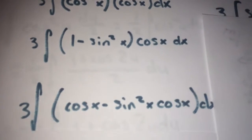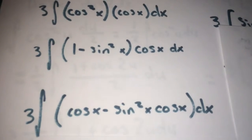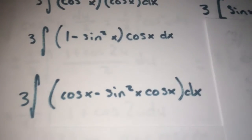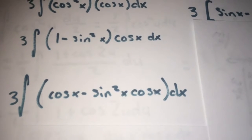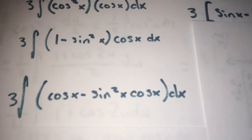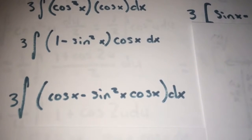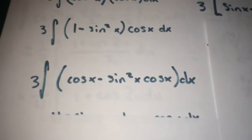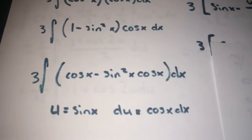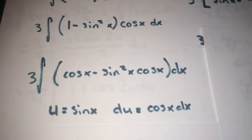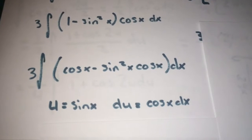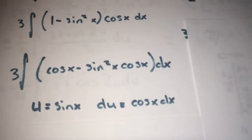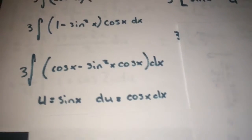From there you can simplify further. That becomes cosine x minus sine squared x times cosine x dx — just multiply it out. Then you can use u-substitution: set u equal to sine x and du equals cosine x dx.